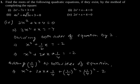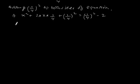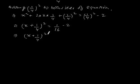This gives x plus 1 by 4, whole squared, equals 1 by 16 minus 2, which implies x plus 1 by 4, whole squared, is equal to minus 31 by 16. Since the square of a number cannot be negative, there is no real root for the given equation.